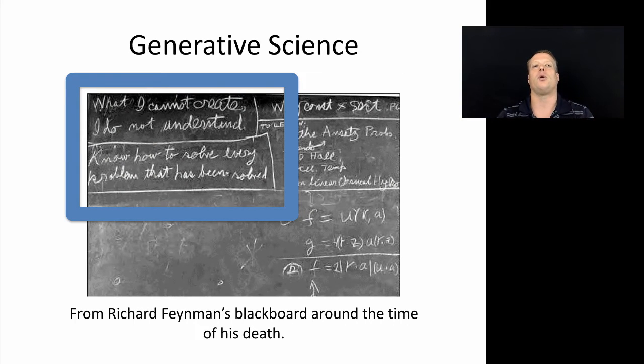This is a quote that I've always loved ever since Uri actually introduced me to it. It was written on Richard Feynman's blackboard around the time of his death. And basically, the basic idea is that it says, what I cannot create, I do not understand. I know how to solve every problem that has been solved. In other words, you need to be able to think about how you're going to create the results of a problem, the results to a problem, in order to fully understand it.